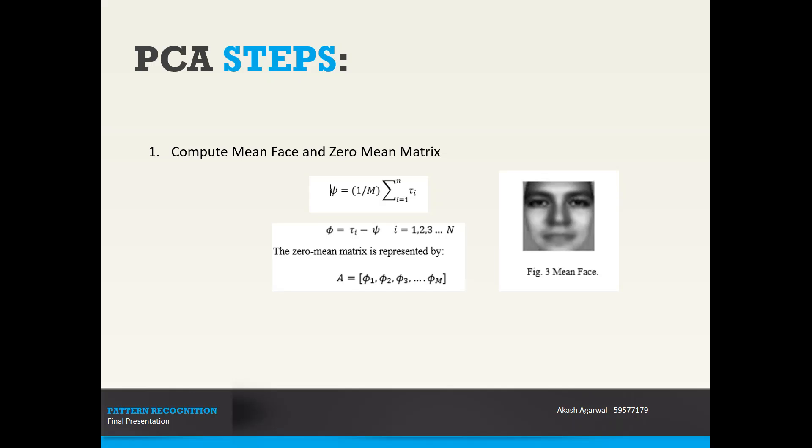Now we will go over the principal component analysis steps in detail. First part is to calculate mean face and the zero mean matrix. The mean face is the average of all the test faces in our input database. The mean is calculated by dividing the total images with the size of the image, and then we calculate the deviation of each image from the mean image. The zero mean matrix is represented in the following way.